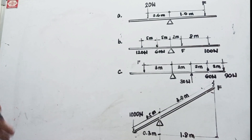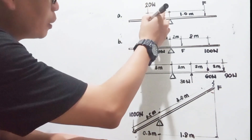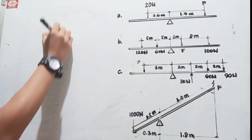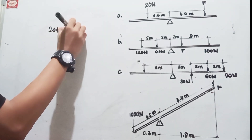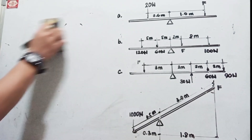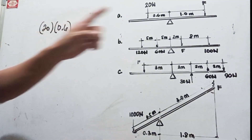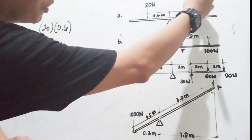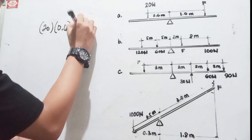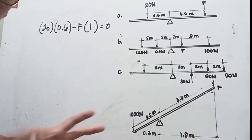First, when you add the forces they should be equal to zero. This 20 N force is going counterclockwise, so it is positive: 20 multiplied by 0.6 meters. Our final answer should be in Newton-meters. The unknown force is going clockwise, so it is negative: minus F multiplied by 1 meter. This should be equal to zero for equilibrium.